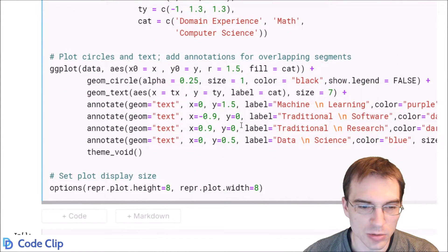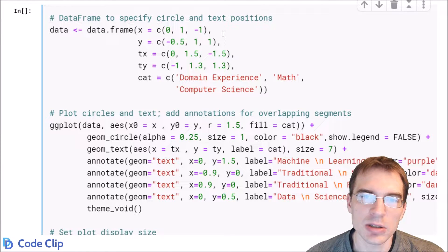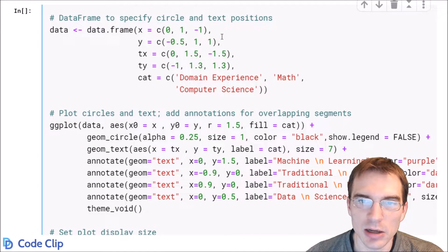Now we'll show how to make the plot here. To construct the data, you actually need to specify the x and y positions of the circles that you want to make. That's what we're doing here.